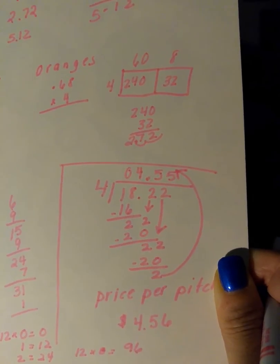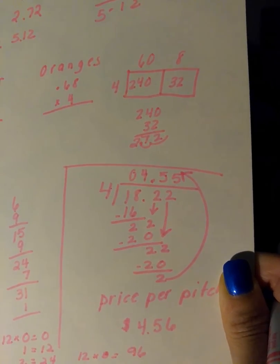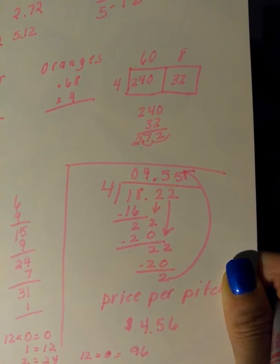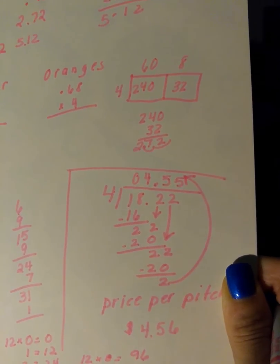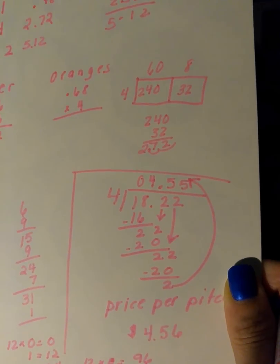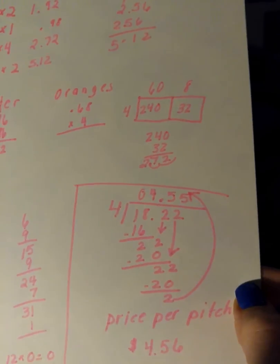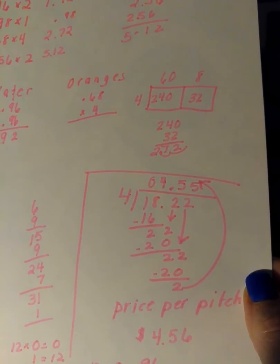4 goes into 1 zero times, 4 goes into 18 four times. That's 16. Subtract 18 minus 16 which is 2. Bring down the next 2. I continued to do that and it left me with a remainder. Remember in money if there is a remainder we have to go up 1 cent. So my price per pitcher is $4.56.